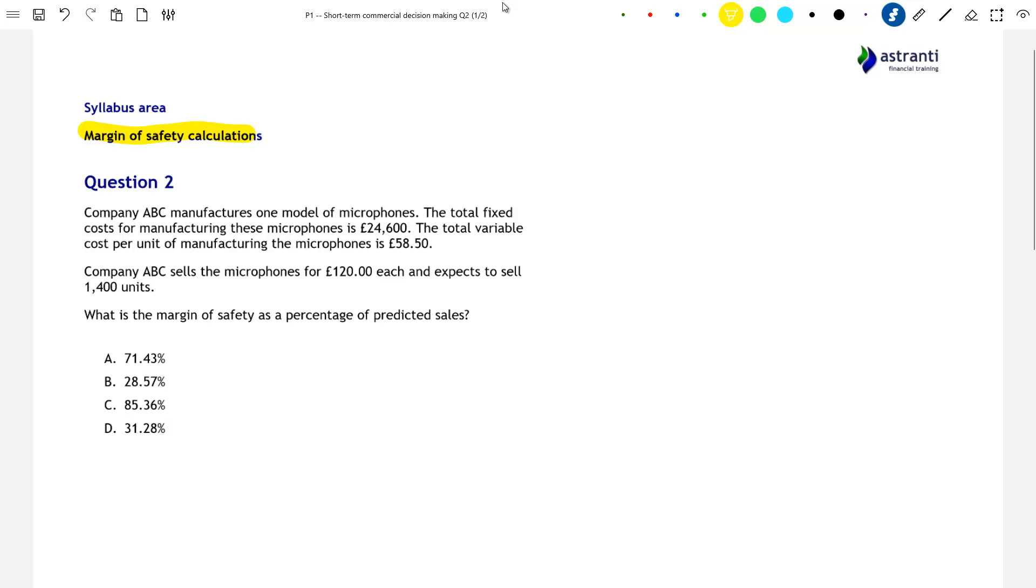Company ABC manufactures one model of microphones. The total fixed costs for manufacturing these microphones is £24,600. The total variable cost per unit of manufacturing the microphones is £58.50. Company ABC sells the microphones for £120 each and expects to sell 1,400 units. What is the margin of safety as a percentage of predicted sales?